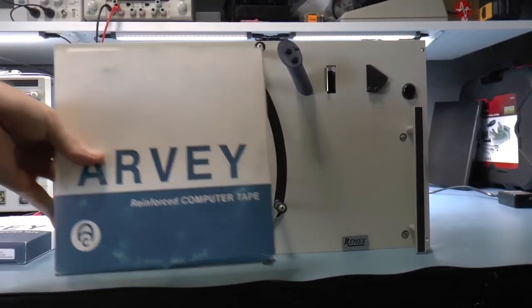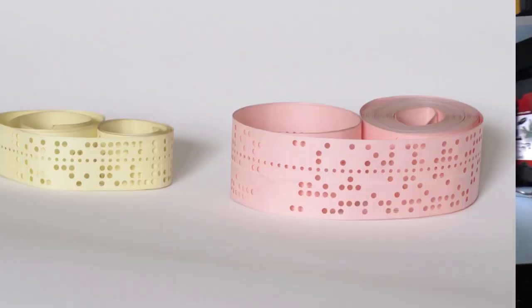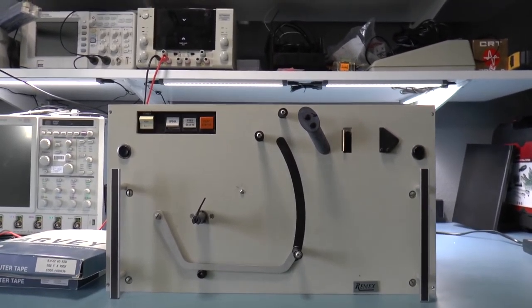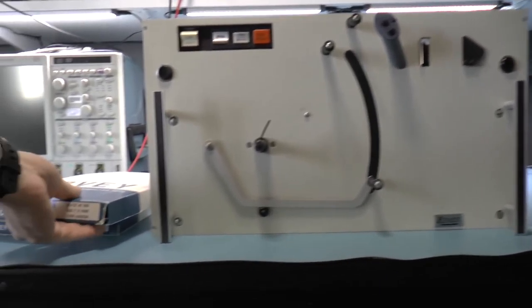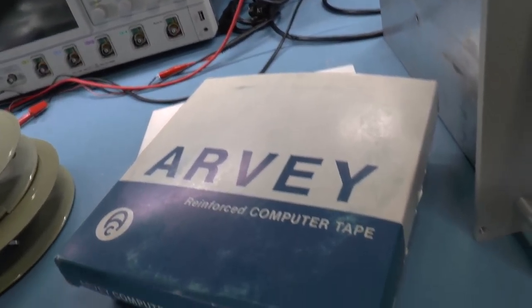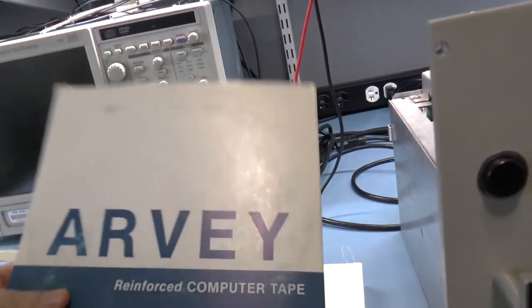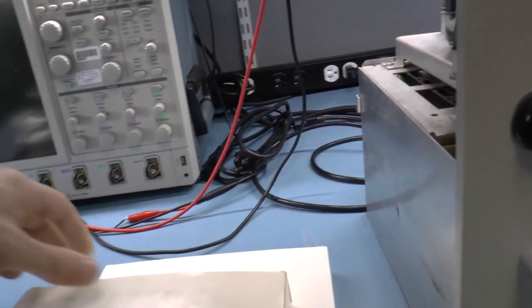Back in the day this was used in addition to or maybe complementary to punch cards. So the idea is that you would take some tape. Let me open some of this tape for you. See I have original boxes. You can just buy these on eBay and this is one inch tape.